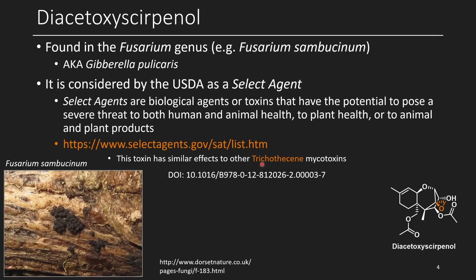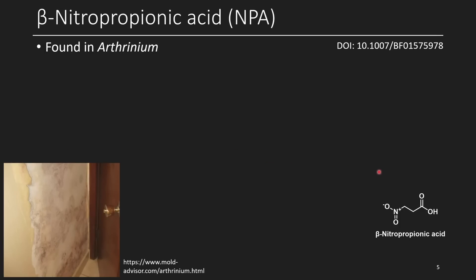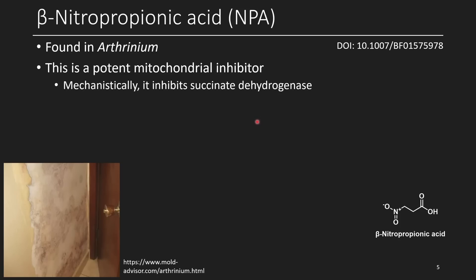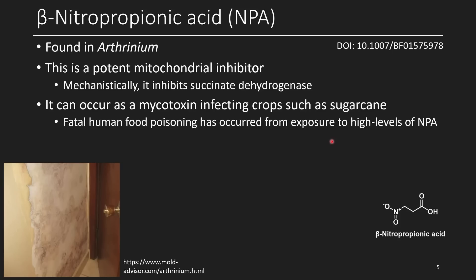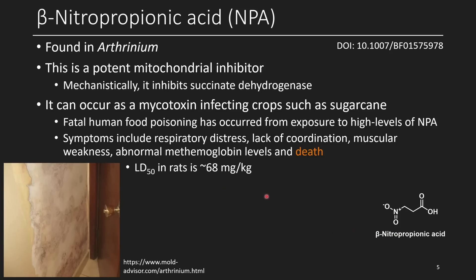Diacetoxyscirpenol has similar effects to the other Trichothecine mycotoxins. The next one is beta-nitropropionic acid, also known as beta-nitropropanoic acid, found in Arthrinium. Its toxicity occurs through being a mitochondrial inhibitor — specifically through inhibition of succinate dehydrogenase. It can occur as a mycotoxin infecting crops such as sugarcane, and there have been several incidents where many people were negatively affected. Symptoms include respiratory distress, lack of coordination, muscular weakness, abnormal methemoglobin levels, and death. The lethal dose in rats is 68 mg per kg.